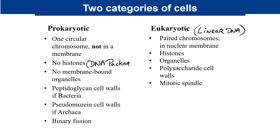Since prokaryotes have less DNA, it may not be necessary for them to have histones. Eukaryotic cells have much more DNA, and histones help with organizing that DNA. Prokaryotes do not have any membrane-bound organelles. Bacteria almost always have peptidoglycan in their cell wall, which is the vast majority of bacteria. Archaea, which are like bacteria, do not have peptidoglycan, but instead possess a peptidoglycan-like chemical called pseudomurein. These organisms reproduce by binary fission — growing longer and pinching in half symmetrically.